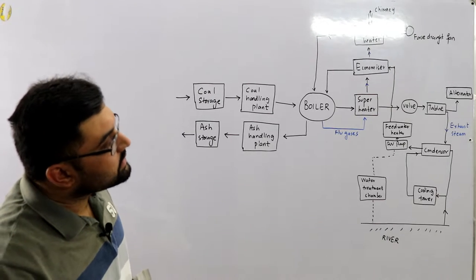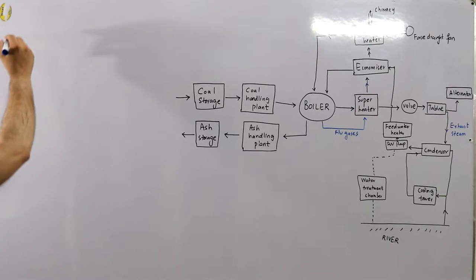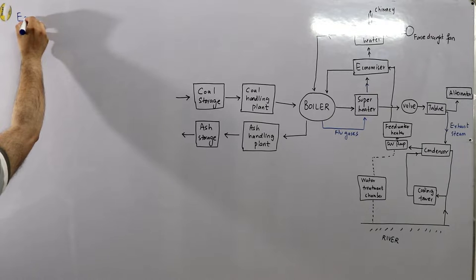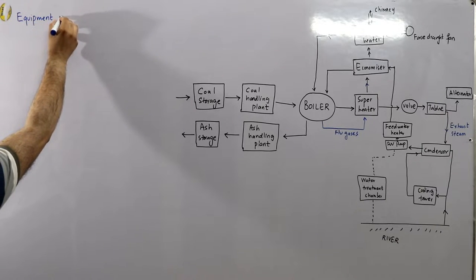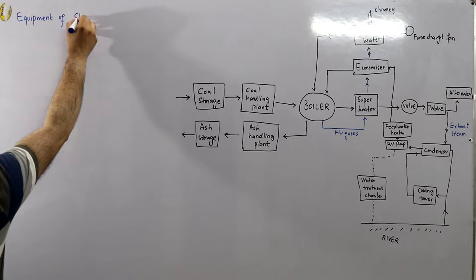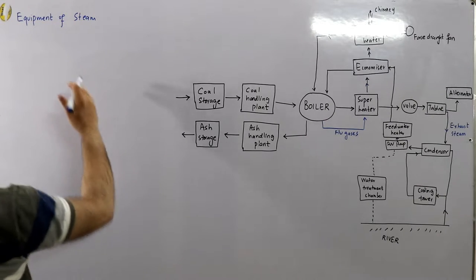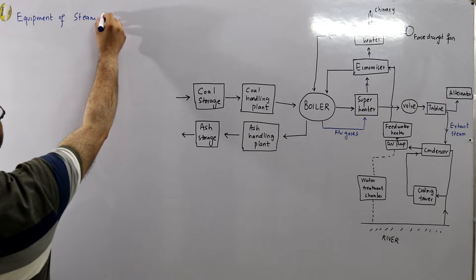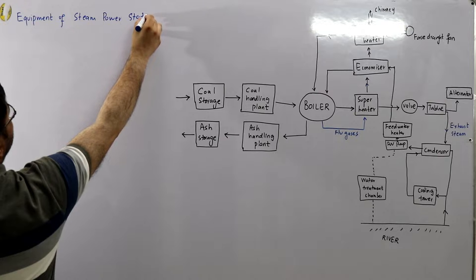Today we look at article number 2.6 of the book — the equipment of a steam power station. The heading is 'Equipment of Steam Power Station.' We will study the construction of the equipment being used, as we basically already know the working of each and every one of them.